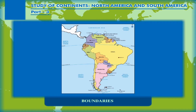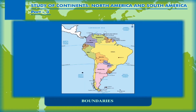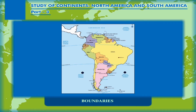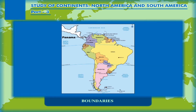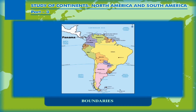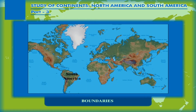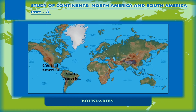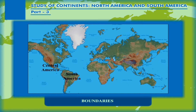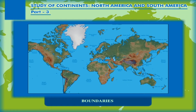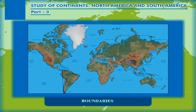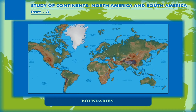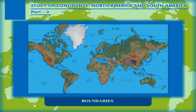The water bodies that surround the continent include the Pacific Ocean in the west and the Atlantic Ocean in the east. The continent is linked to North America by the isthmus of Panama in the north. The continent of South America along with the countries of Central America, West Indies, and the country of Mexico is known as Latin America. The continent is almost triangular in shape, with its base in the north and a tapering apex in the south, formed by a group of islands separated from the mainland by the Strait of Magellan.